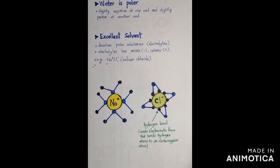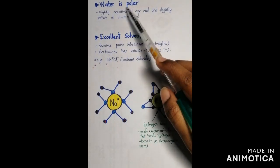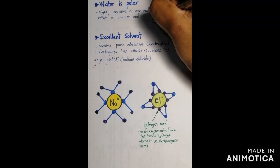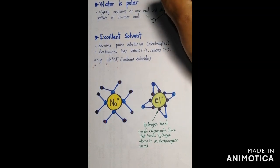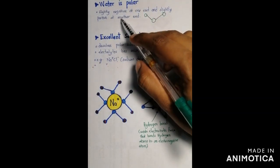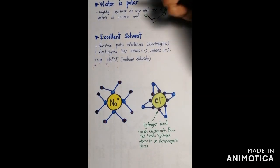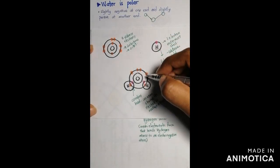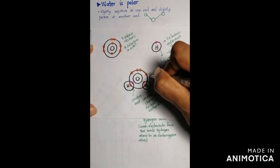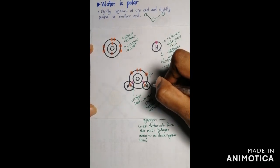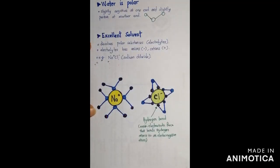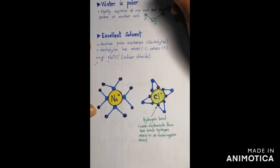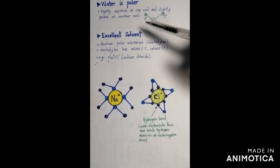The next property of water is that water is polar. Polar means the molecule is slightly negative at one end and slightly positive at another end. After sharing electrons through covalent bonding, we can see that the oxygen atom has more valence electrons, so it is slightly negative. The hydrogen atoms are slightly positive. Therefore, water is polar.